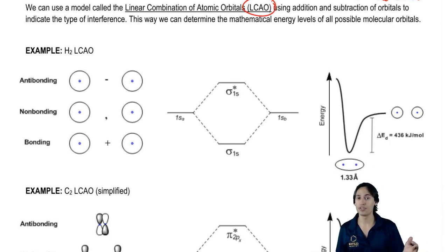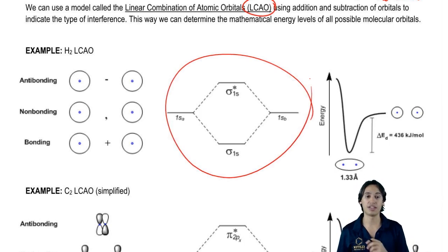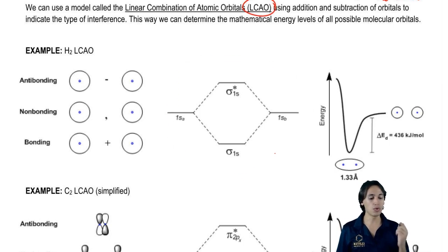It's called the Linear Combination of Atomic Orbitals. If you ever see LCAO, that just means this little diagram that I have drawn right here. So let's get right into it and figure out what's going on.